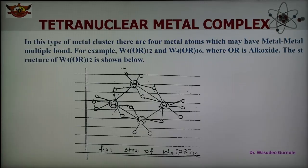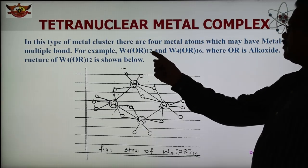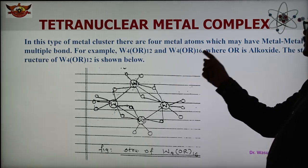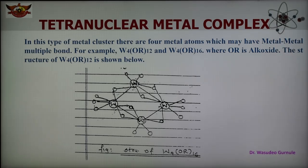In case of tetranuclear metal complexes or metal clusters, 'tetra' means 4. So 4 metal atoms are present in the cluster compound, and these 4 atoms have metal-metal multiple bonds. Examples of this type are W4OR12 and W4OR16, where OR is the alkoxide ligand — methoxide, ethoxide, propoxide, and similar.